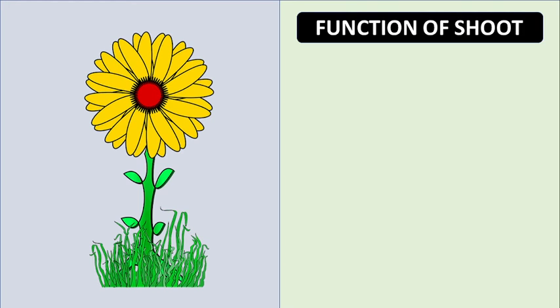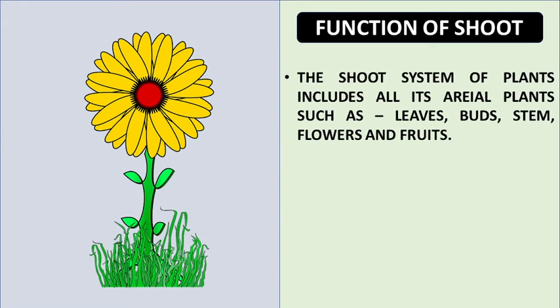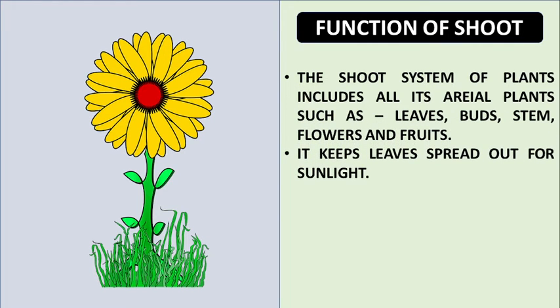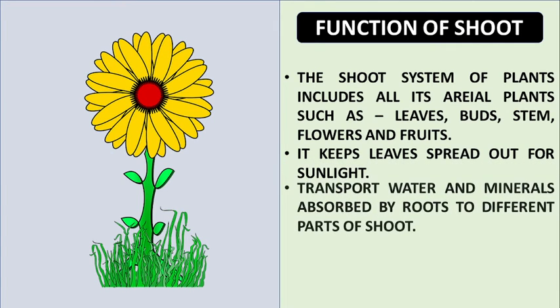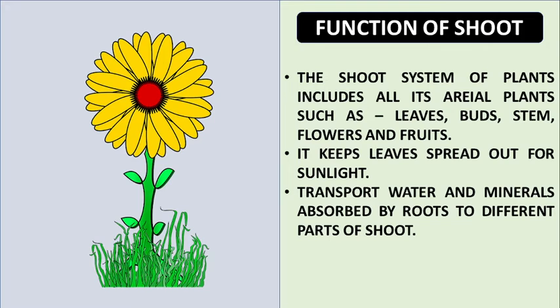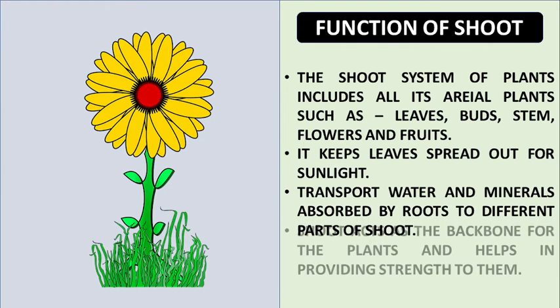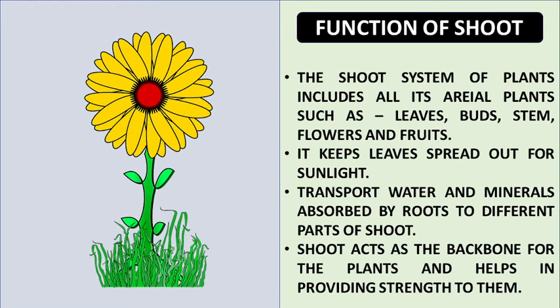Function of shoot. The shoot system of plants includes all its aerial parts such as leaves, buds, stem, flowers and fruits. It keeps leaves spread out for sunlight, transports water and minerals absorbed by roots to different parts of shoot, and acts as the backbone for the plant, providing strength.